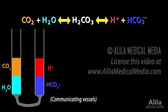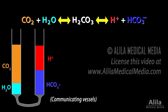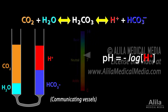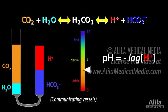Continued carbon dioxide production by all cells of the body drives the equilibrium to the right to generate more hydrogen ions. Because pH is basically a function of hydrogen ion concentration, more hydrogen means higher acidity and lower pH.